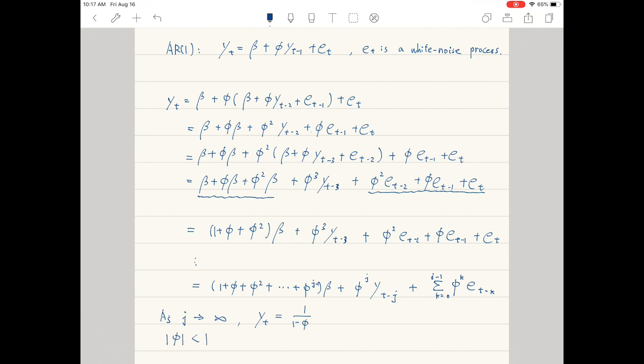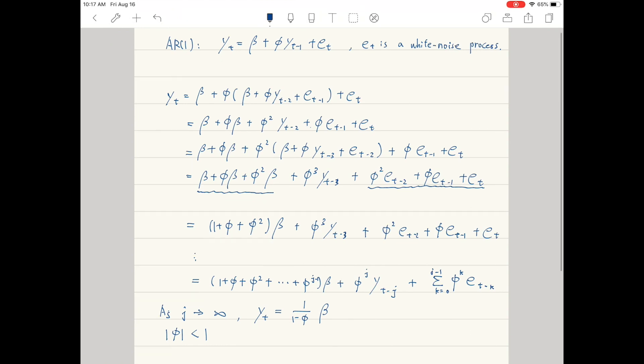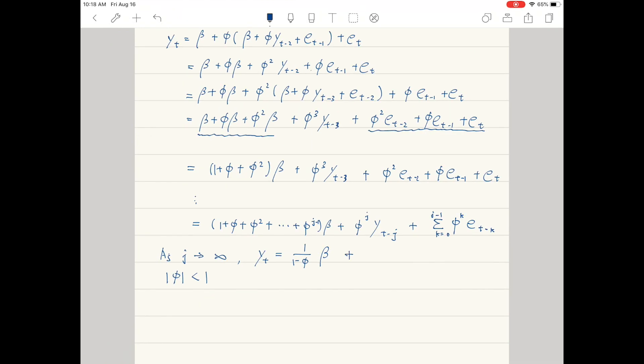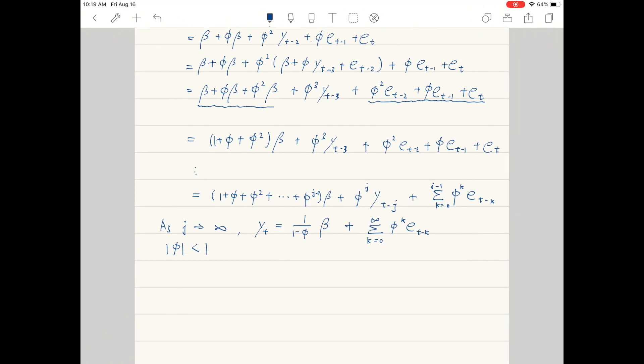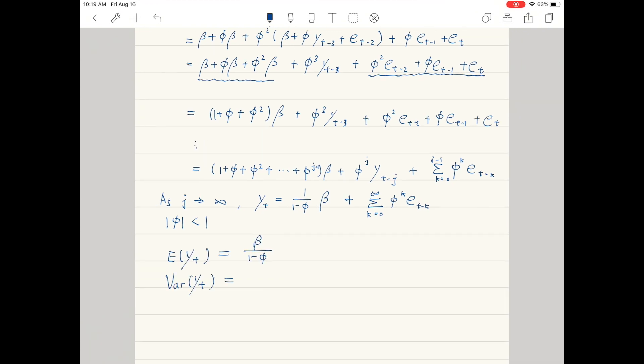If phi is less than 1, then we can obtain the mean, variance, and covariance of the first order autoregressive process. All of them are independent of time. So the autoregressive process is Covariance Stationary.